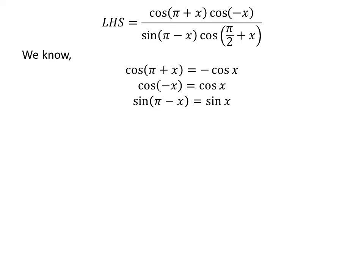We also know sine of pi minus x is equal to sine of x. And we also know cosine of pi upon 2 plus x is equal to minus sine of x. The proofs of these trigonometric identities are given in the video appearing in the upper right corner, and the links are also given in the description section.